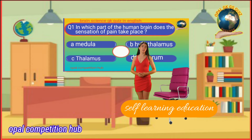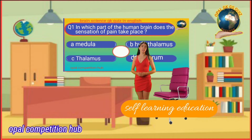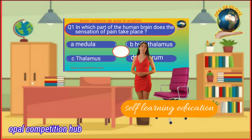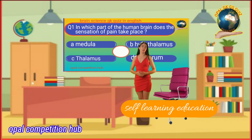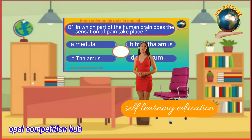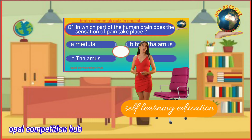Question number 1: In which part of the human brain does the sensation of pain take place? Option A: Medulla. Option B: Hypothalamus. Option C: Thalamus. Option D: Cerebrum. Your time starts now. Your answer will be Option D: Cerebrum.